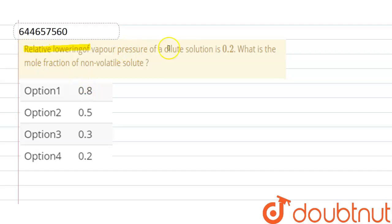Relative lowering of vapor pressure of a dilute solution is 0.2. What is the mole fraction of non-volatile solute?